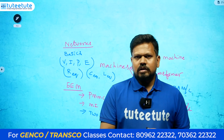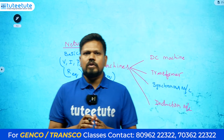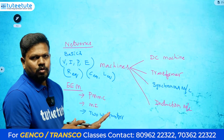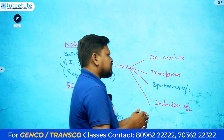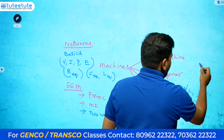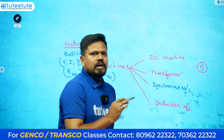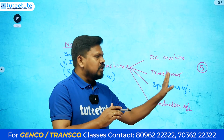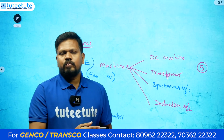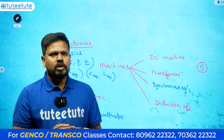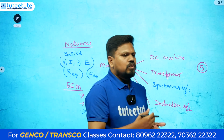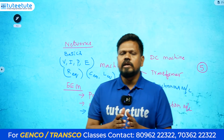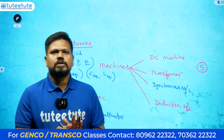In the basic circuits section, there may be four to five questions maximum — possibly six or seven, but we're expecting around five questions. If you know the procedure, you will definitely get the correct answer.